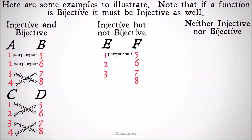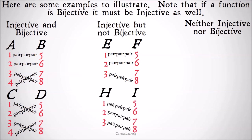For injective but not bijective, we get things like E and F, where all of the members of E are matched with one member of F. All of the members of F are matched with at most one member of E, but at least one member of F is not matched with anything in E — that's what makes this injective but not bijective. For H and I, we see a similar thing: all the members of H are matched with a single member of I, and all the members of I are matched with at most one member of H — not more than one, but possibly zero. If there is a member of I which is not matched with anything in H, then it's not bijective.